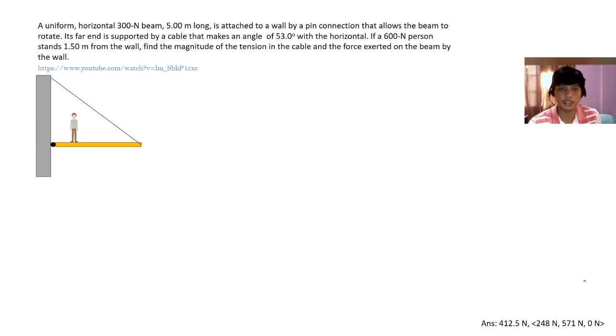Following the tradition that I started with the previous videos, start with a system schema. We have the wall, we have the person, and the beam. I think there are just four objects here, and the earth. Why didn't I include the cable? Because the cable has no mass and is only there to provide the tension that will support the beam. Did I miss any object? No.